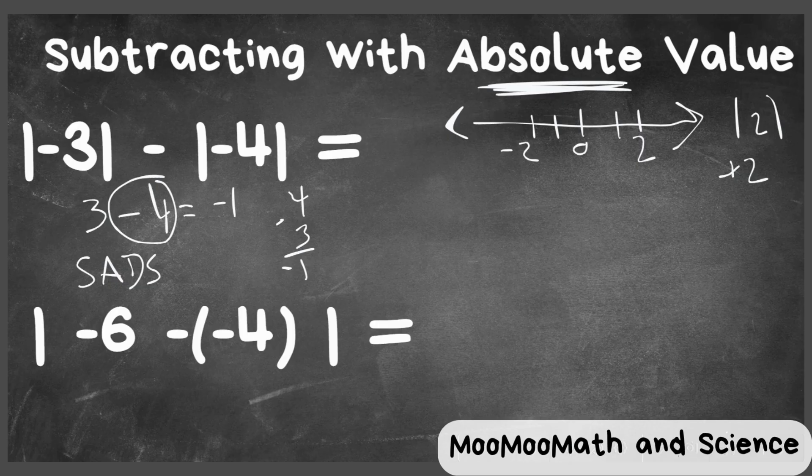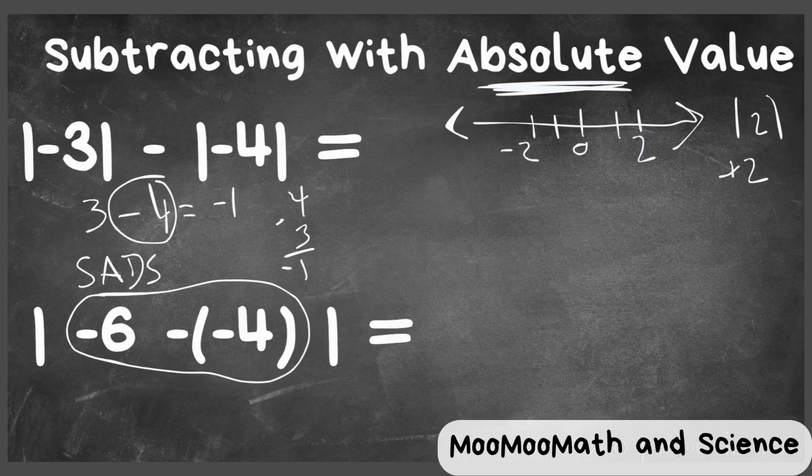Now in this next one, we have a value inside the absolute bars or absolute value signs. So we solve this first, and then it's going to be a positive number. So let's go ahead and apply.